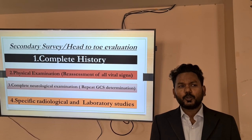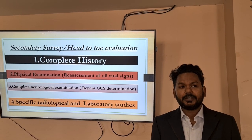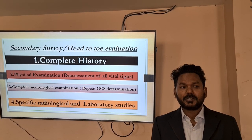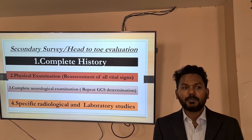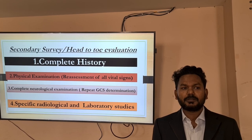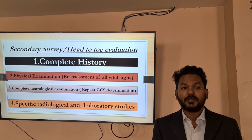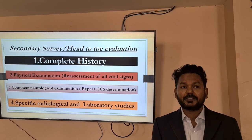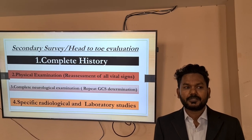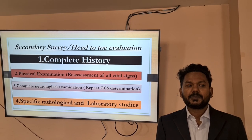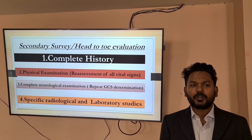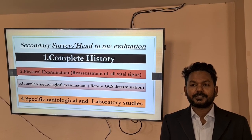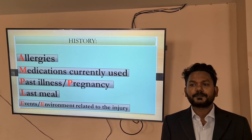Four components of the secondary survey are: complete history, physical examination, complete neurological examination including repeat GCS determination, and specific radiological as well as laboratory studies.